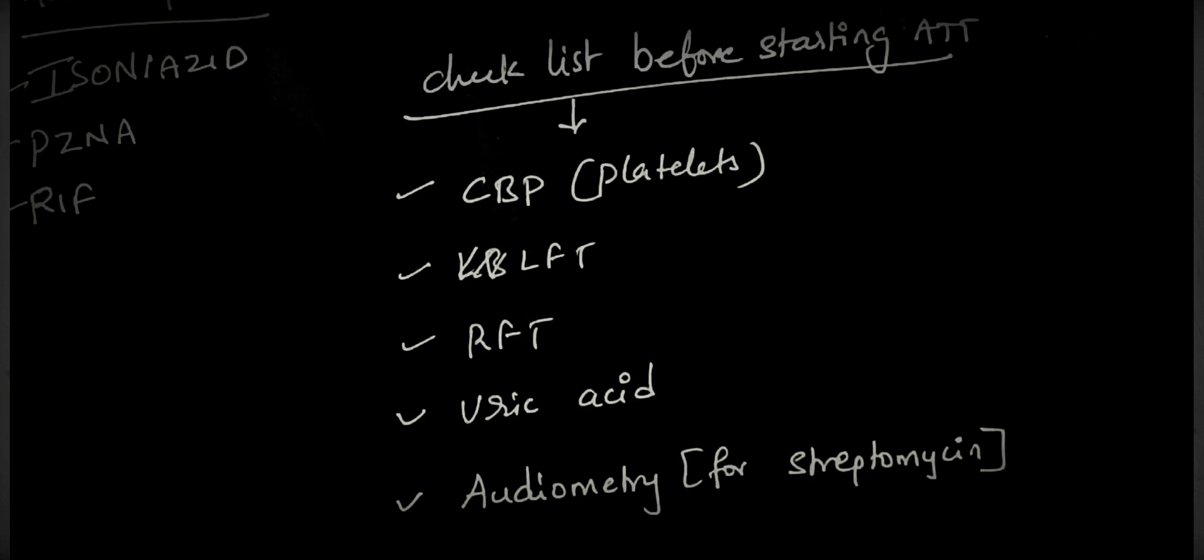Rifampicin can cause peripheral neuropathy, for which we have to give pyridoxin supplement to the patient. It is the most hepatotoxic drug. Rifampicin can also cause autoimmune thrombocytopenia and orange colored urine.